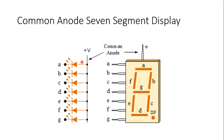In a common anode display, the anodes of all the LEDs present in the 7-segment display are tied together. The cathode terminal is kept free and will be connected to the controlling circuitry. The LEDs are arranged as A, B, C, D, E, F, G, and dot point. All anodes are tied together and taken out as the common terminal.